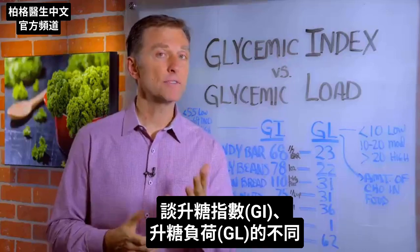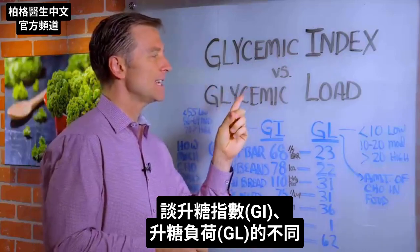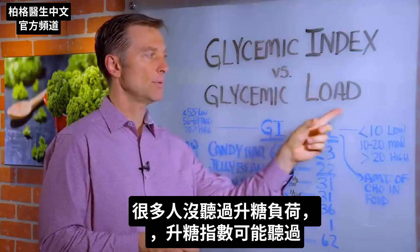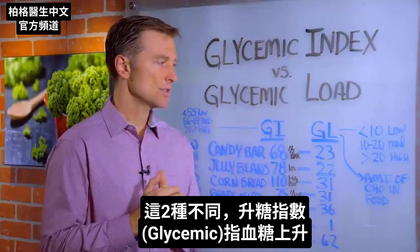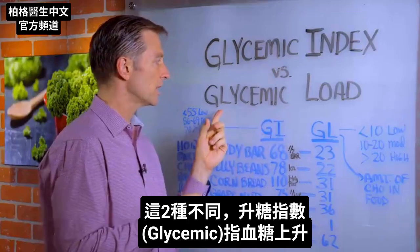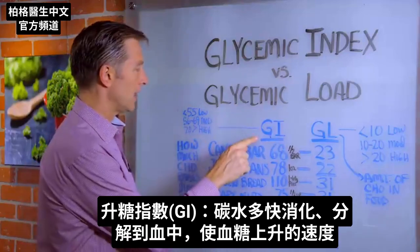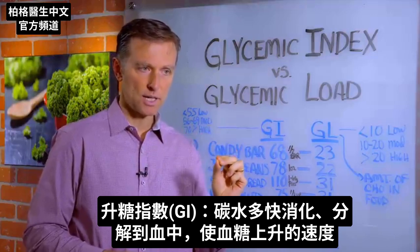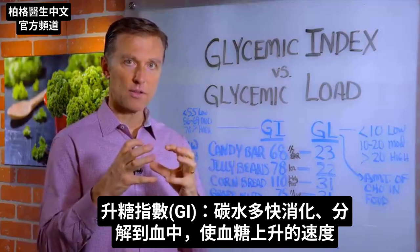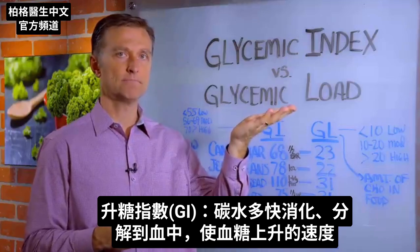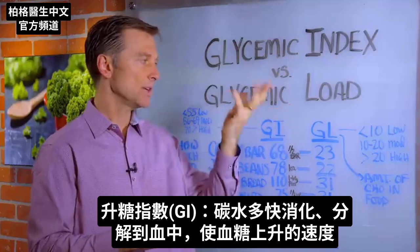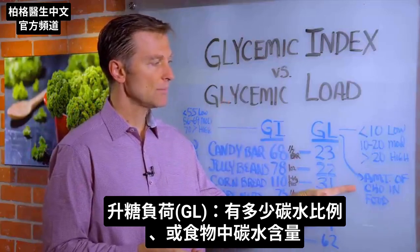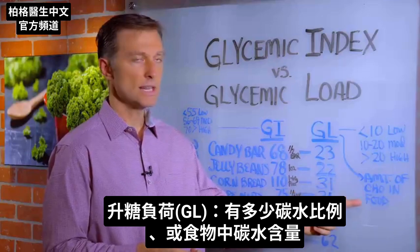In this video we're going to talk about the difference between the glycemic index and the glycemic load. There are two different factors here we want to talk about, especially when we're dealing with glycemic, which means sugar. The glycemic index is how fast that carbohydrate is digested or broken down into the blood, and how much power that has to raise the blood sugar and the speed at which it raises the blood sugar. Whereas the glycemic load is a little different — it's the concentrated amount of carbohydrate in the food.